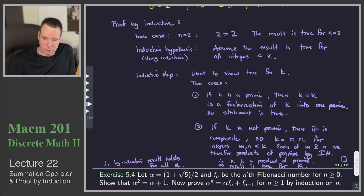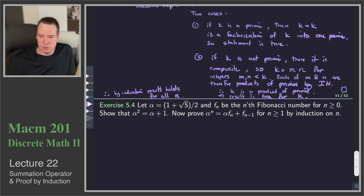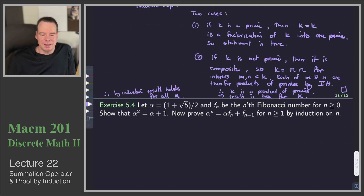That was a refresher on the proof technique of induction. The main object of this section was the summation operator, but we saw how it produces summation formulas encountered in proofs by induction. As a final exercise, if alpha is (1 plus root 5) over 2 and f_n is the nth Fibonacci number, prove a result relating f_n and f_{n-1} using induction. That's it for this section — thanks for watching and we'll see you next time.